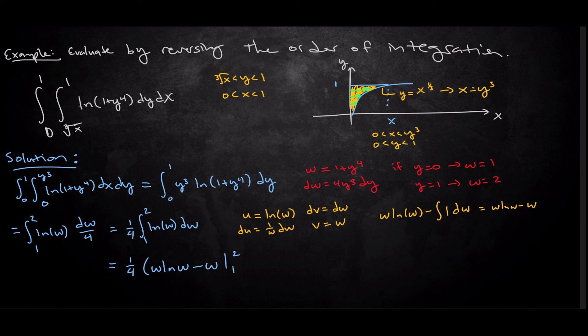So this is just going to end up being 1 over 4 times w natural log of w minus w, from 1 to 2, which is going to be 1 over 4 times 2 natural log of 2 minus 1. And that is our answer.